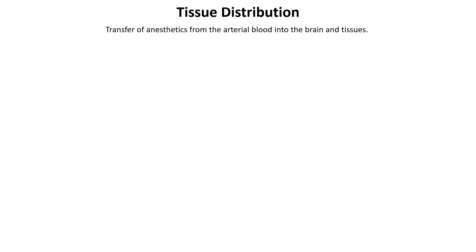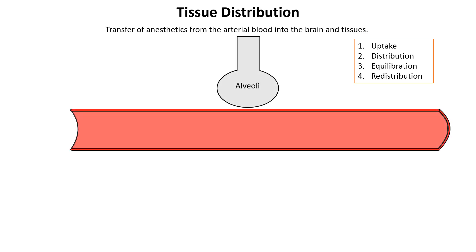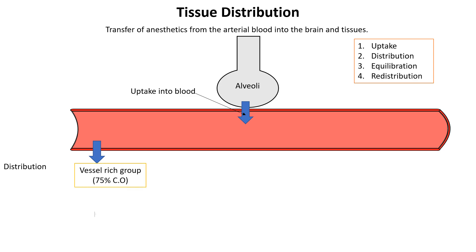Tissue distribution involves transfer of anesthetics from the arterial blood into the brain and tissues. The process involves uptake into blood, distribution, equilibrium, and redistribution. Inhalational anesthetics are first absorbed into the bloodstream via the alveoli in the lungs. Once in the bloodstream, the anesthetic is delivered to various tissues, with highly perfused organs like the brain, heart, liver, and kidneys receiving it quickly.